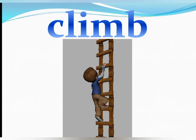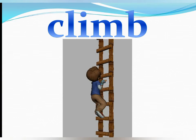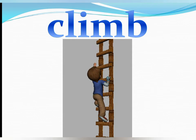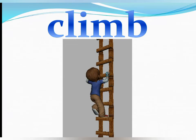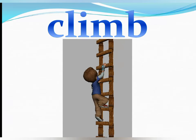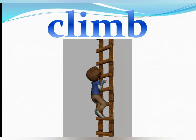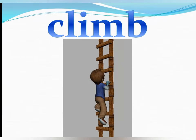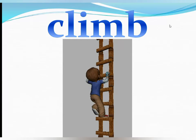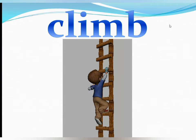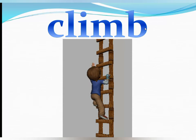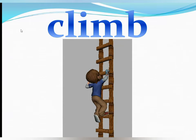Teacher will show a picture to all students and tell them what the boy is doing — he is climbing. The vocabulary word is 'climb,' and this is the action of climb. Teacher will ask them to perform the same action, saying the word 'climb' again and again. Students will stand on their seats and perform the climbing action, repeating the word climb about 6 to 8 times.